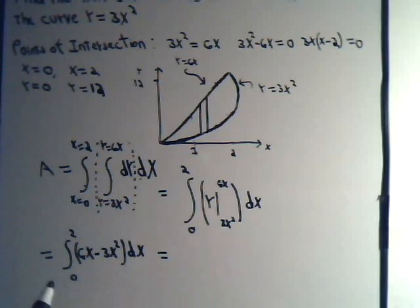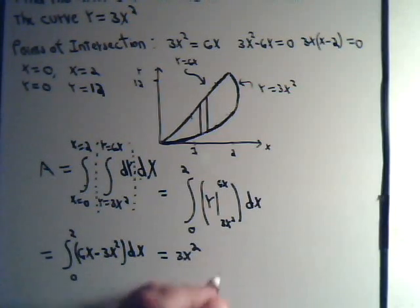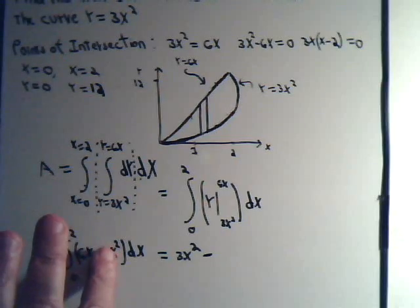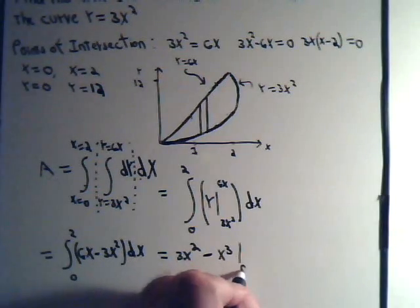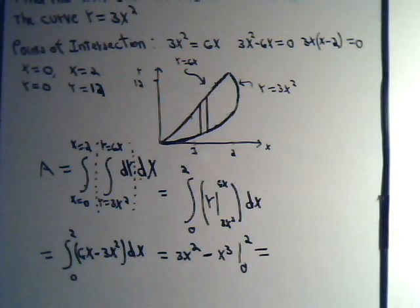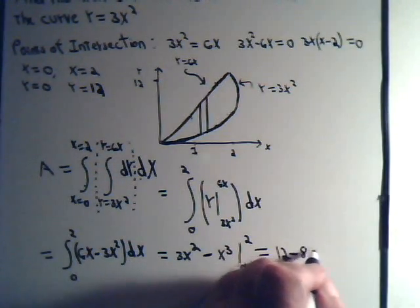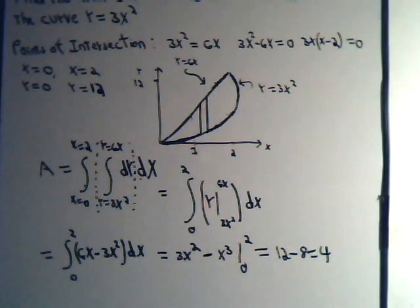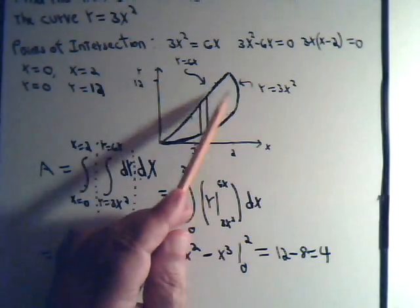Now, it looks like this should be pretty straightforward. The integral of 6x dx is 3x squared. So, this would be 3x squared minus the integral of 3x squared is x cubed. x goes from 0 to 2. So, here we have 0's when we substitute 0. When we substitute 2, 2 squared is 4 times 3 is 12. Minus 2 cubed is 8. So, our region of interest would have an area of 4 units.